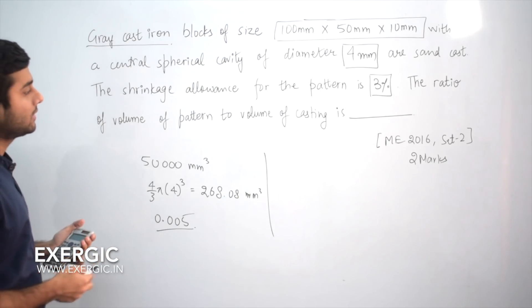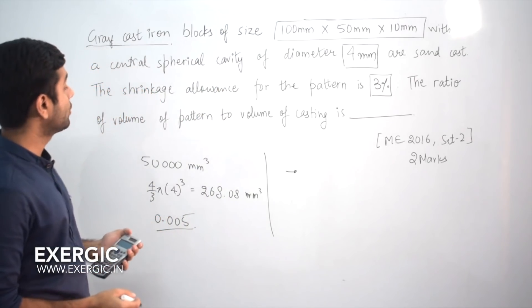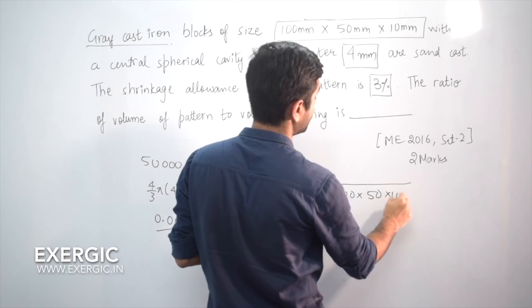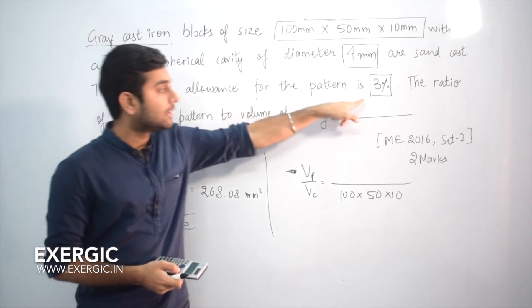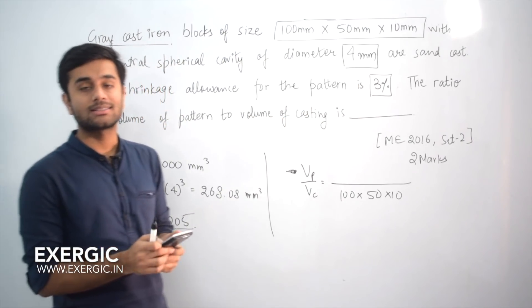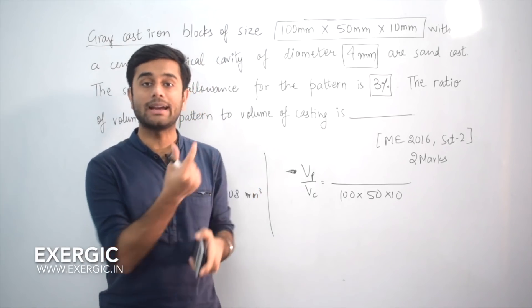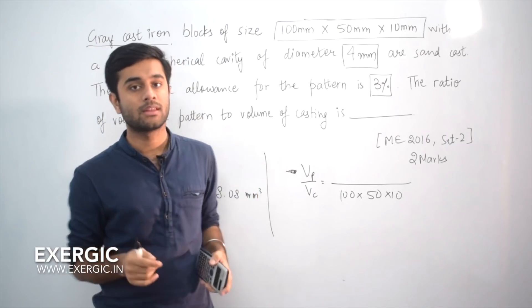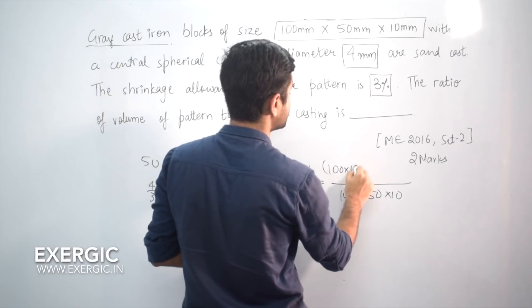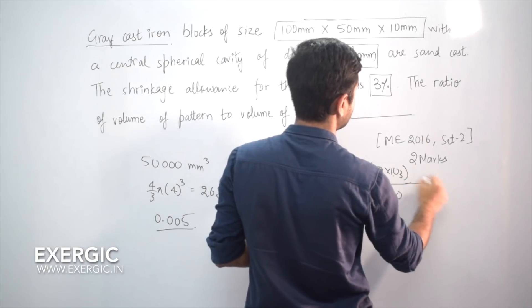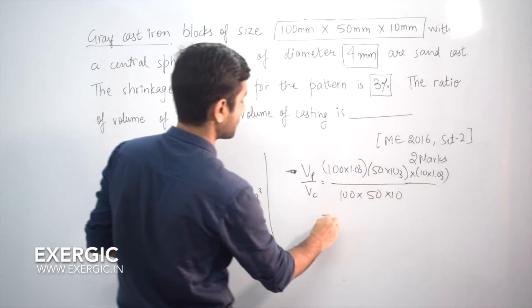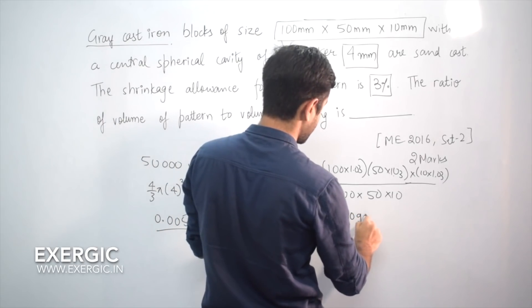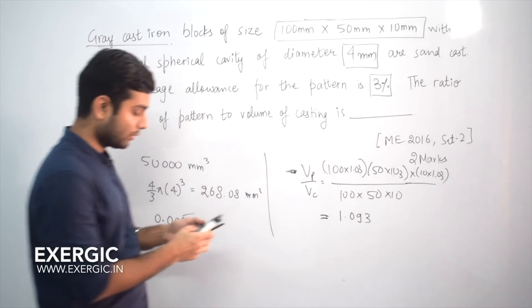Now let's come to the calculation of it. The ratio of volume of pattern to volume of casting. Volume of casting is 100 multiplied by 50 multiplied by 10, all in mm. The volume of pattern - the shrinkage for pattern is 3 percent. It means that a size of 100mm will have to be made 3mm larger, that is 3 percent of allowance. For every 100mm, make 3mm extra for pattern. It will shrink that much. So this dimension will become 100 multiplied by 1.03, similarly 50 multiplied by 1.03, similarly 10 multiplied by 1.03. These will cancel, ultimately will have 1.03 cube which will be almost 1.093. OK, this is the answer for this question.